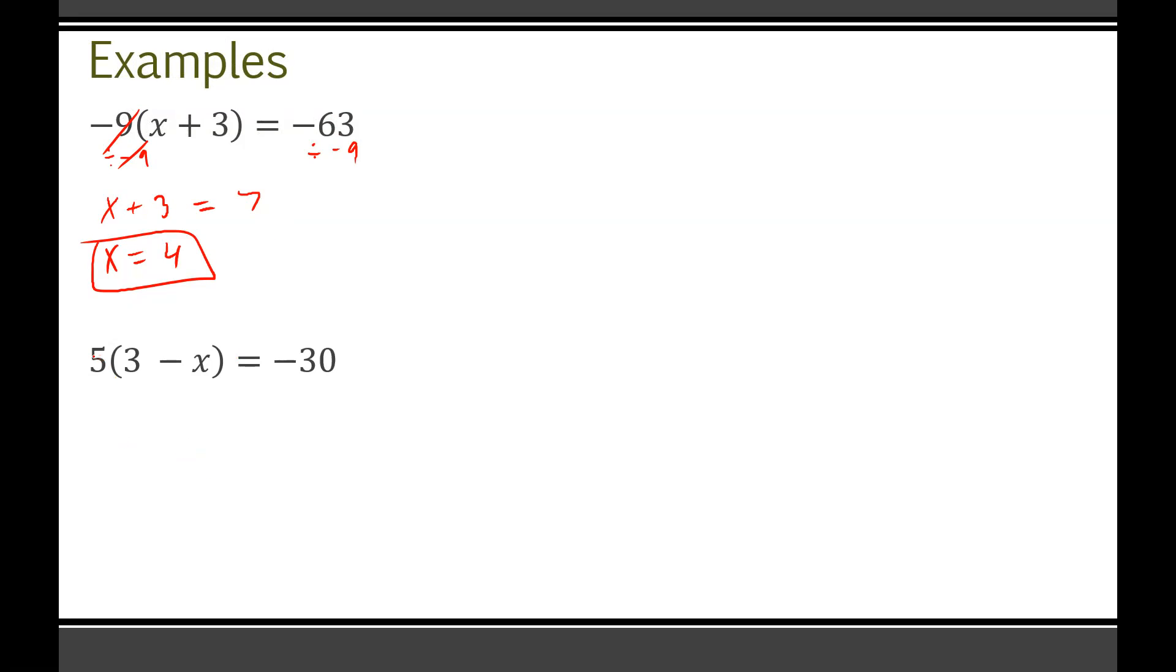Again, if you double dip negative nine through, you can still solve it. But in this case, because negative 63 does divide by negative nine, I chose to do that first. Next question, same kind of idea. You could double dip the five through if you want, but I always just check negative 30. Does that divide by five? Yes, it does. So I can divide by five on both sides there.